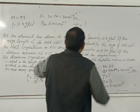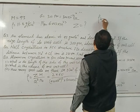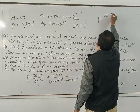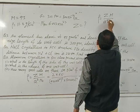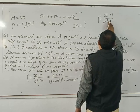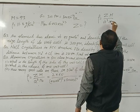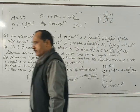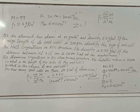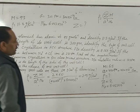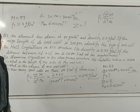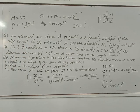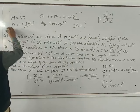Substitute the values into the equation rho equals Z times M divided by A cubed times N and find the value of Z. If Z equals 1, the structure of the unit cell is simple cubic. If Z equals 2, it is BCC. If Z equals 4, it is FCC.